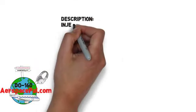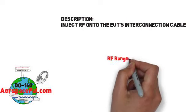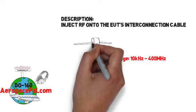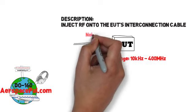During this test we're going to inject radio frequencies onto the interconnecting cable. This is going to be run between 10 kHz and 400 MHz and it's going to be induced onto your interconnecting bundle or bundles using a bulk injection clamp.